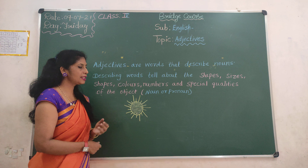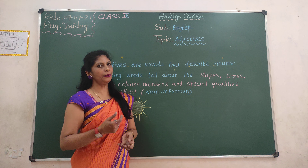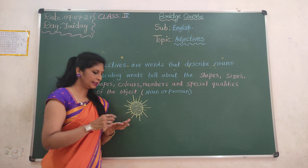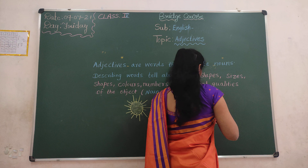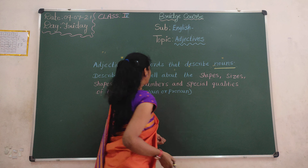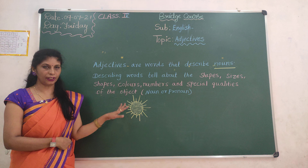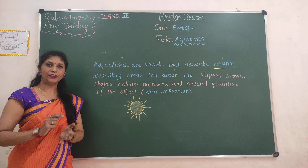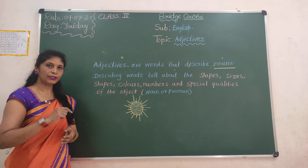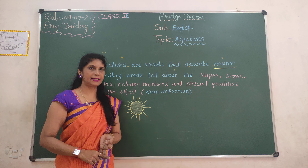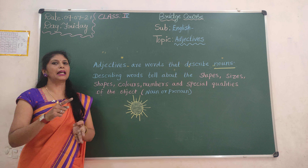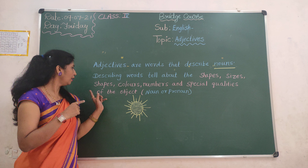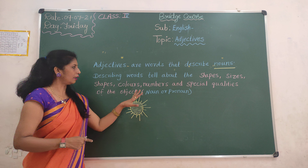Adjectives are words that describe nouns. Describing words tell about the shapes, sizes, colors, numbers, and special qualities of the object.